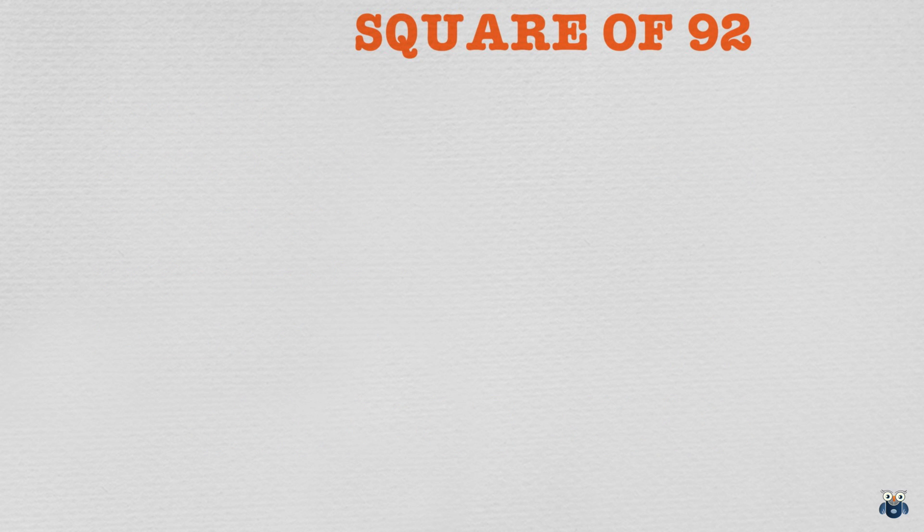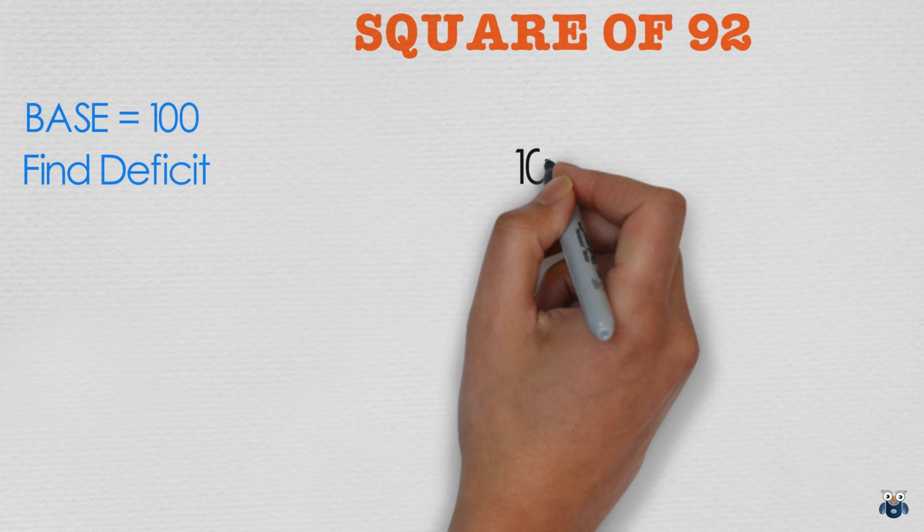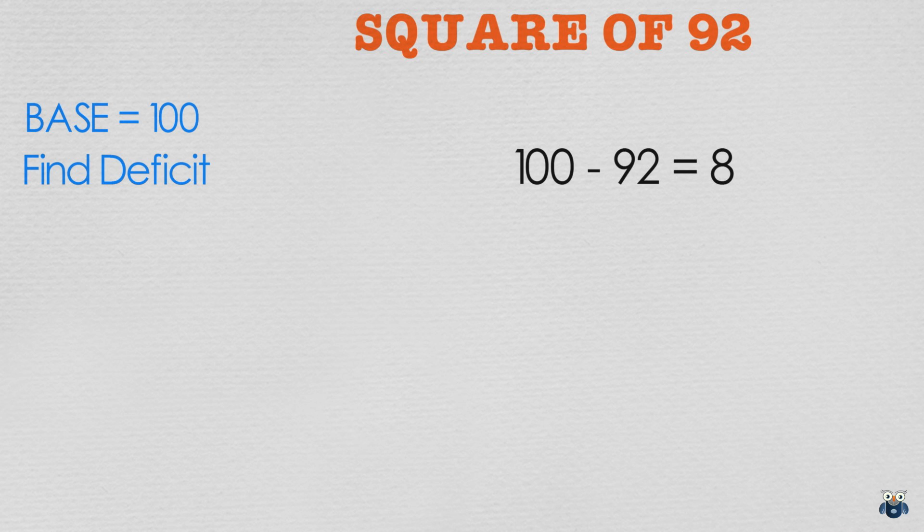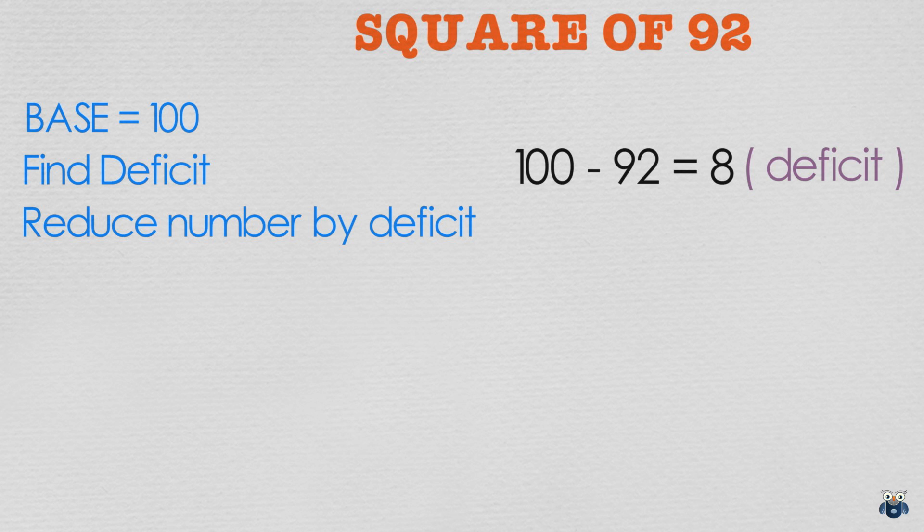Let's try another example to reinforce the concept. What is 92 square? We first find our base. 92 is close to 100 so our base is 100. We then find the deficit. 92 is 8 less than 100 so our deficit is 8.